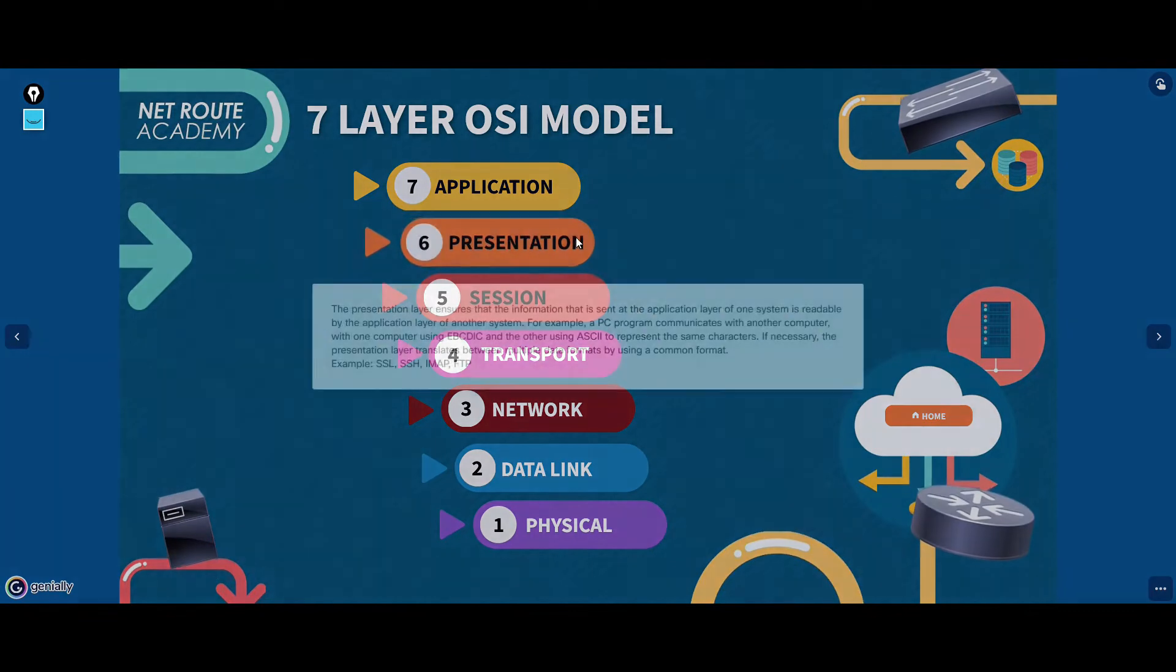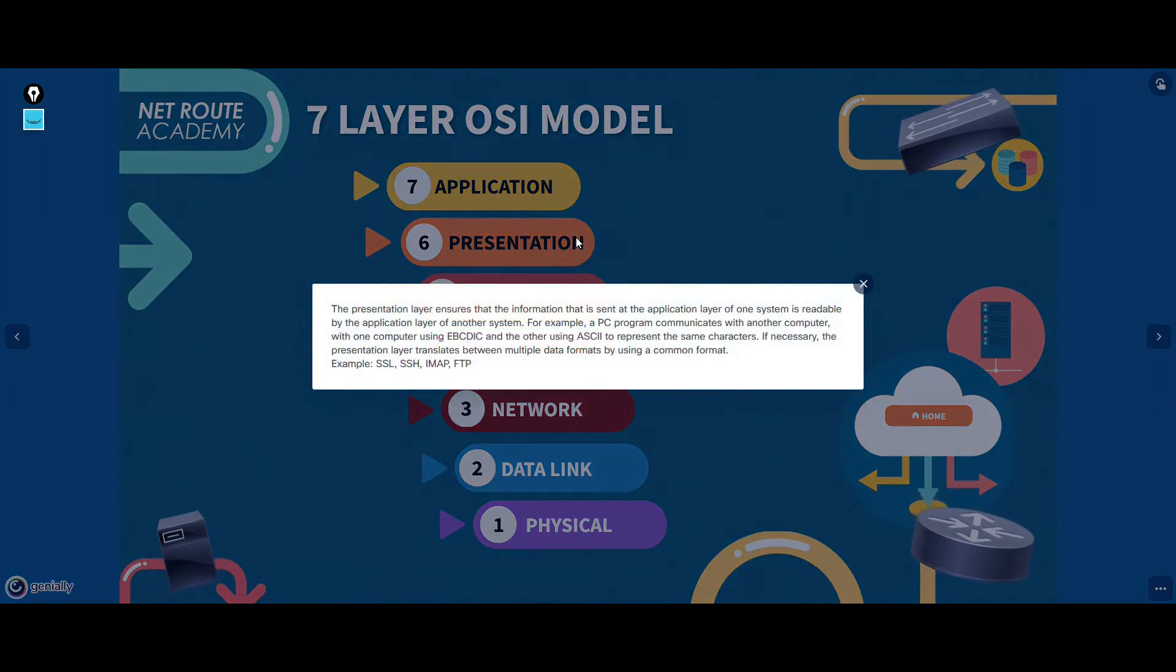In the OSI model, the presentation layer is responsible for reformatting, compressing, or encrypting data in a way that the application on the receiving end can read.